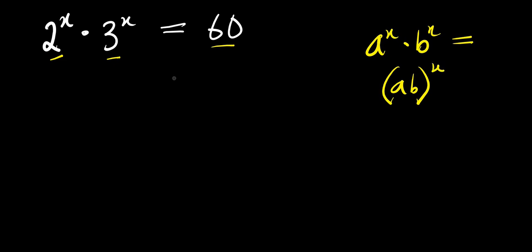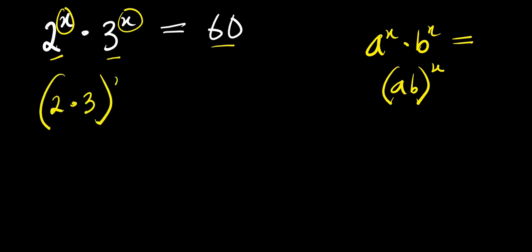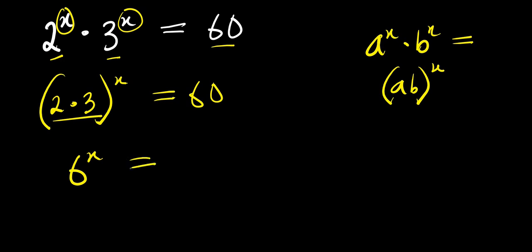So I can apply that here. I take the common exponent, which is x. I have 2 times 3 raised to the power of x, and this equals 60. And 2 times 3 is 6, so I have 6 to the power x equals 60.